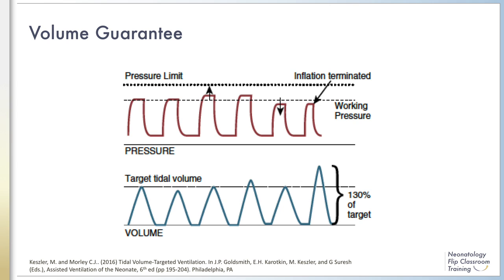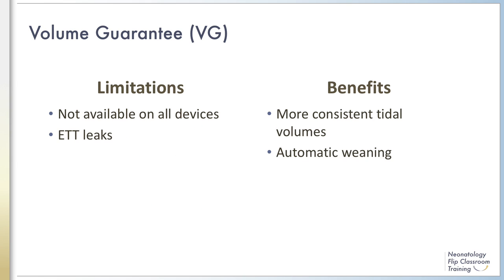This means it may take a few breath cycles to reach the targeted tidal volume if there is a significant change in patient lung compliance or inspiratory effort. Looking at the waveforms on this slide, the tidal volume for the second breath is below the target volume, so on the next breath the pressure is increased to reach the target volume. On the following breath, the volume is above the target, so the pressure is decreased. The dotted line at the top is the set pressure limit — inflation is terminated if the pressure reaches this limit, even if the set tidal volume has not been reached.